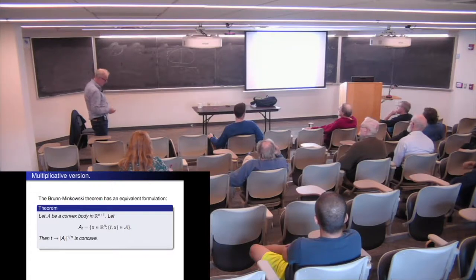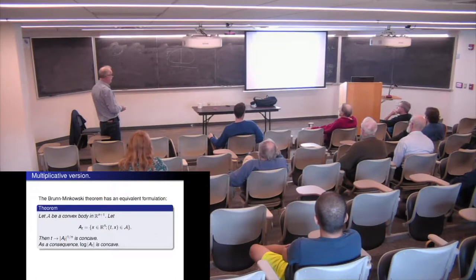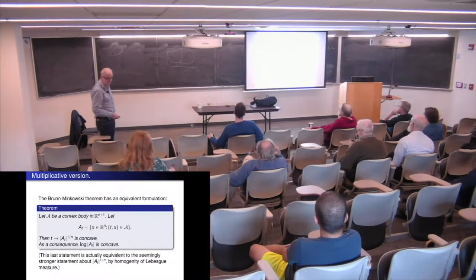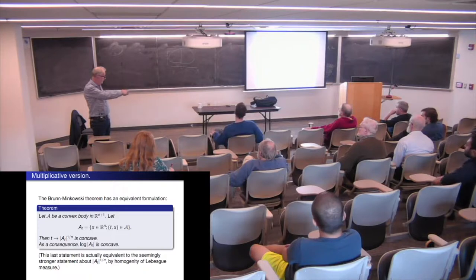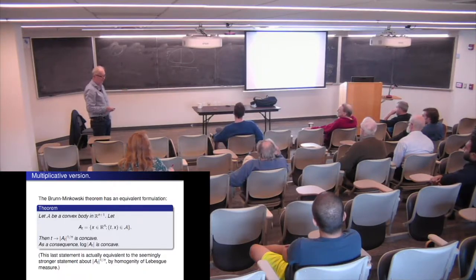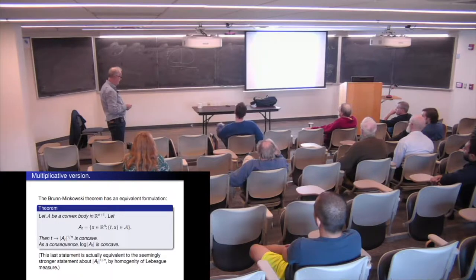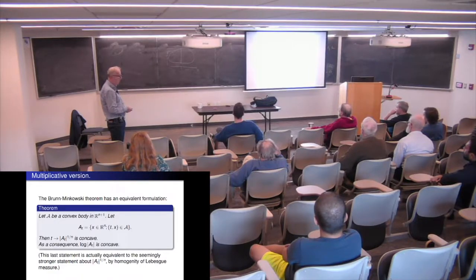You can make it a little weaker by saying this implies that the logarithm of the volume is concave — that's an immediate consequence. But actually it's also equivalent, because you can prove the stronger version from the log version by using the homogeneity of Lebesgue measure. When we look at other measures that are not Lebesgue, then it's really a difference, and the log version is better. Sometimes this is called the multiplicative version of the Brunn-Minkowski theorem.